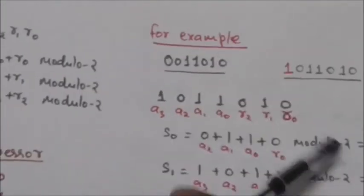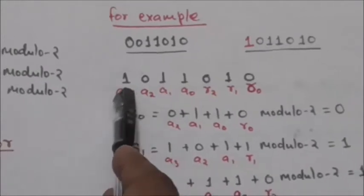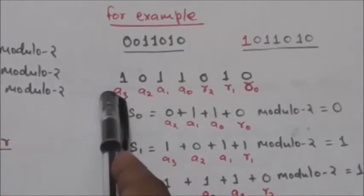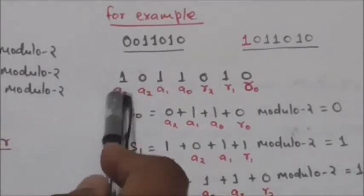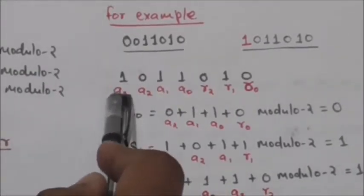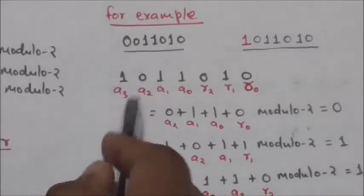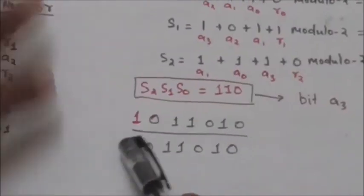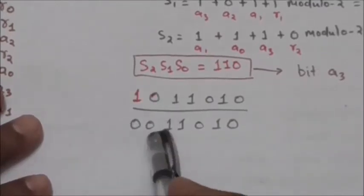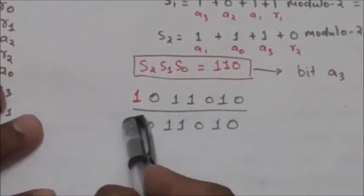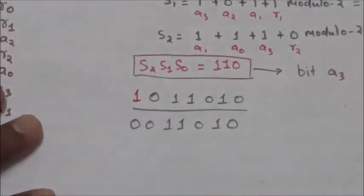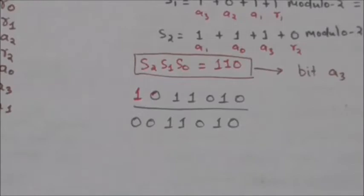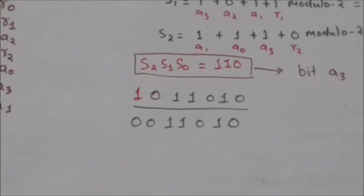When the value of s2, s1, s0 is 1,1,0, it means the error is in bit a3. So to correct the error we will change the value of bit a3. In this received code word the value of a3 is 1, so we change it to 0. This gives the correct code word 0011010. This is how the Hamming code is used for error correction.